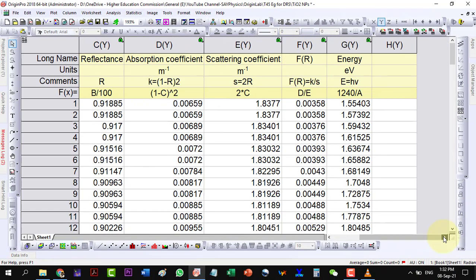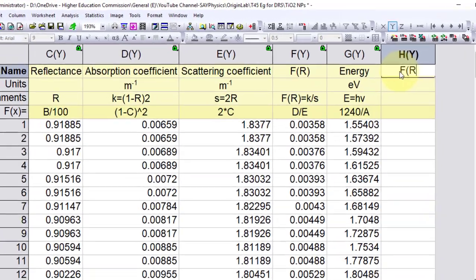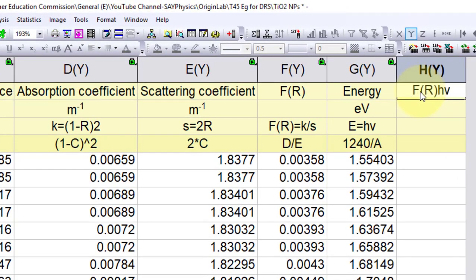We will calculate F times energy in units of electron volt centimeter inverse with power one-half by multiplying column F and G with power one-half.